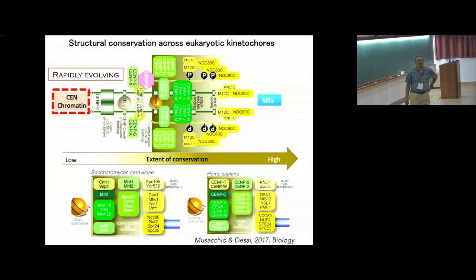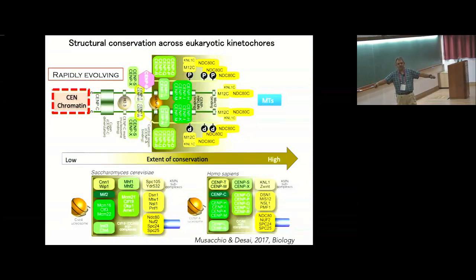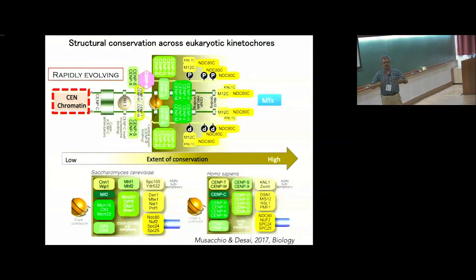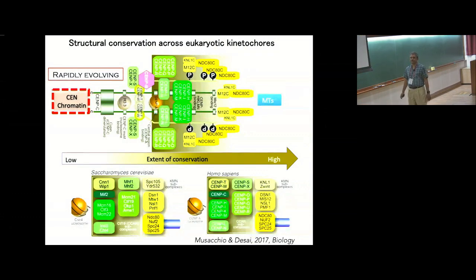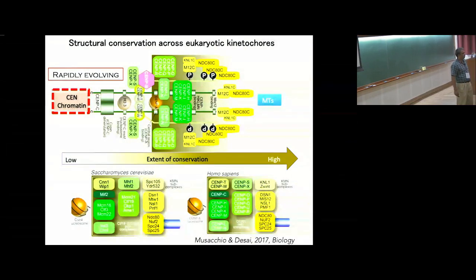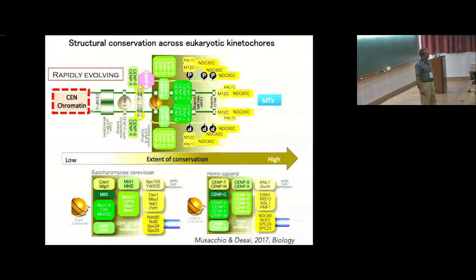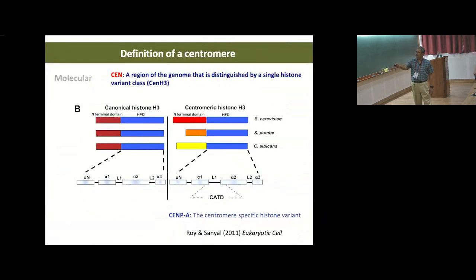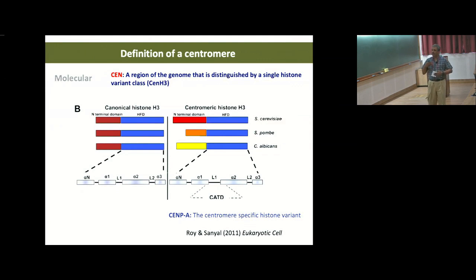Audience question about CENPA conservation: CENPA is conserved, but its conservation is restricted to the histone fold domain, whereas the N-terminal sequences are very species-specific. One hypothesis is that the N-terminal sequences provide species specificity and can recognize different DNA sequences at the centromere.